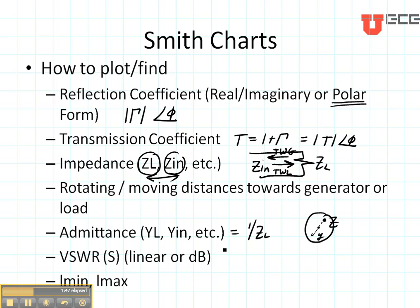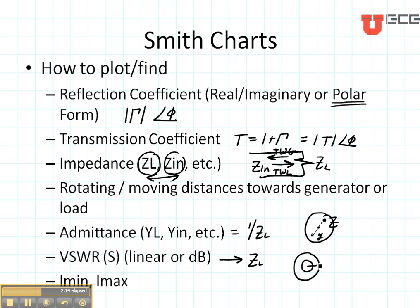The voltage standing wave ratio and the location of L-min and L-max are typically used to help us find the load when we have measured the standing wave ratio and L-min, L-max. It's also reasonable to plot the load and be able to say what the voltage standing wave ratio is. Remember, the voltage standing wave ratio is a constant circle like a protractor circle inside the Smith chart, and we read it off the axis on the right. The location of the voltage minimum, L-min, is on the left side; L-max is on the right side of the Smith chart.